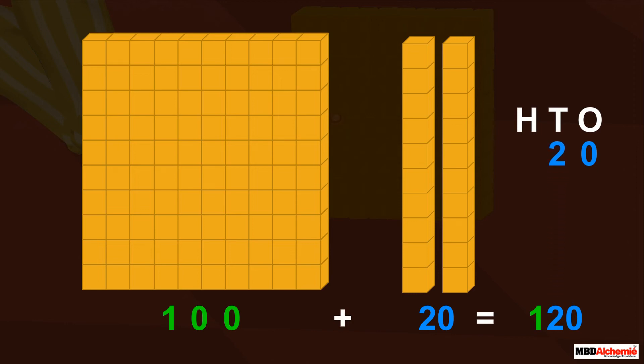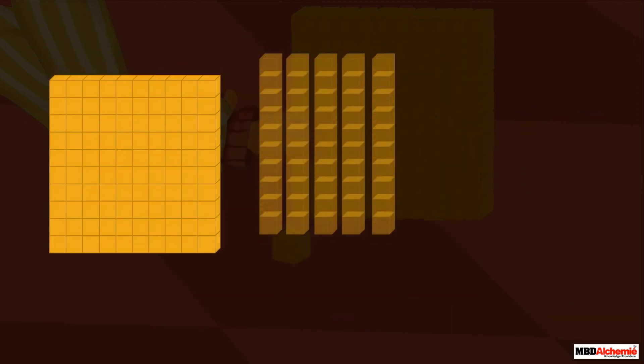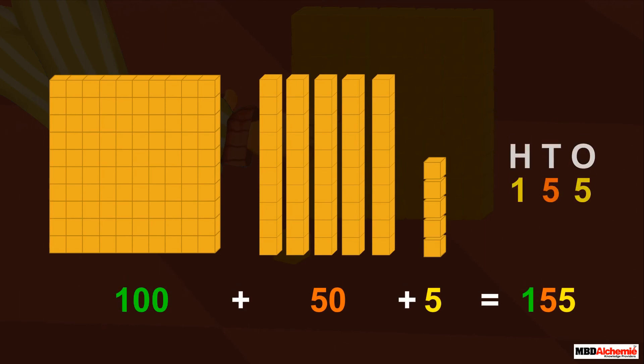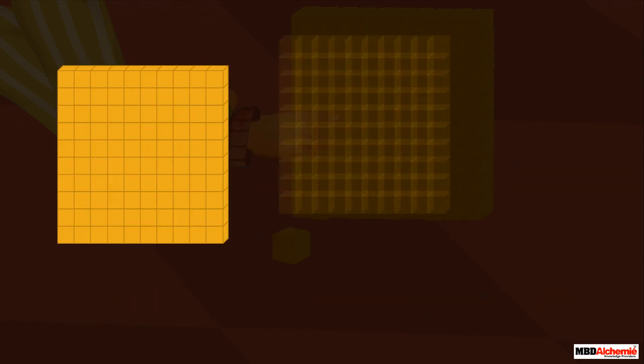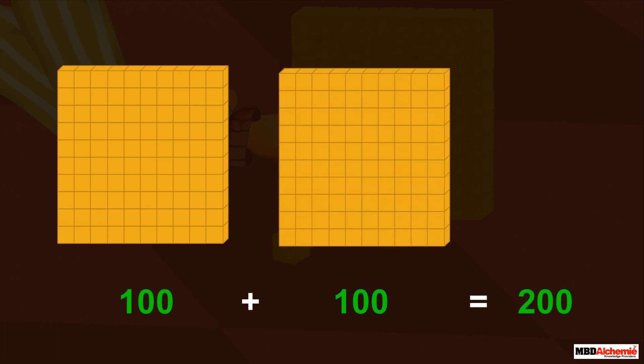2 under ten's column and 1 under hundred's column. 155 and 200 are represented as shown in the animation.